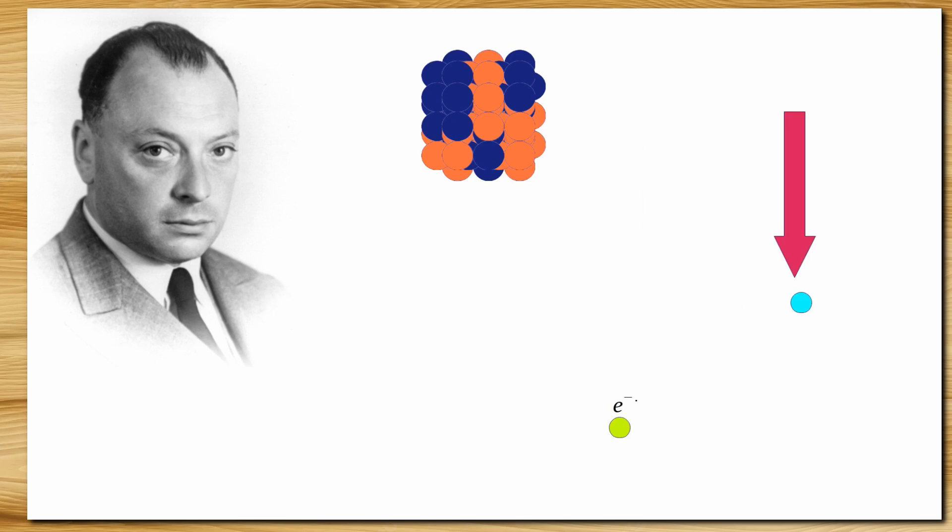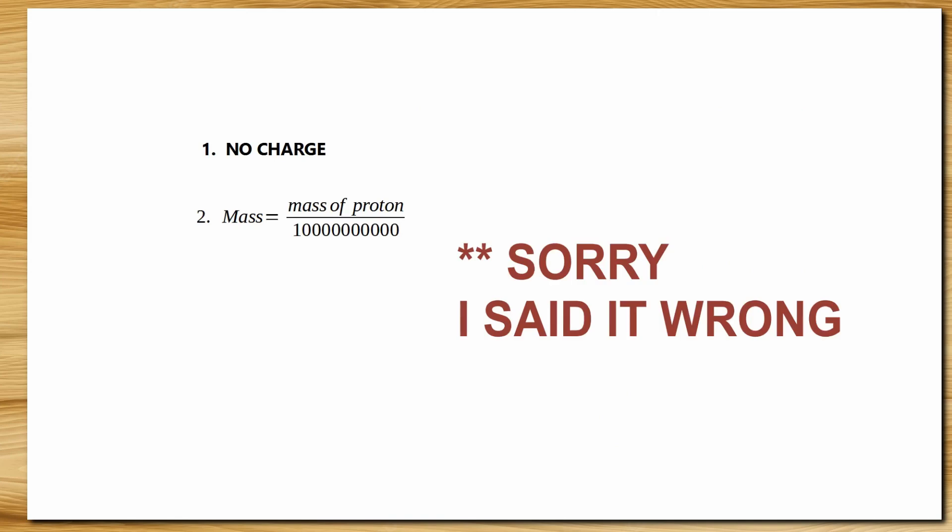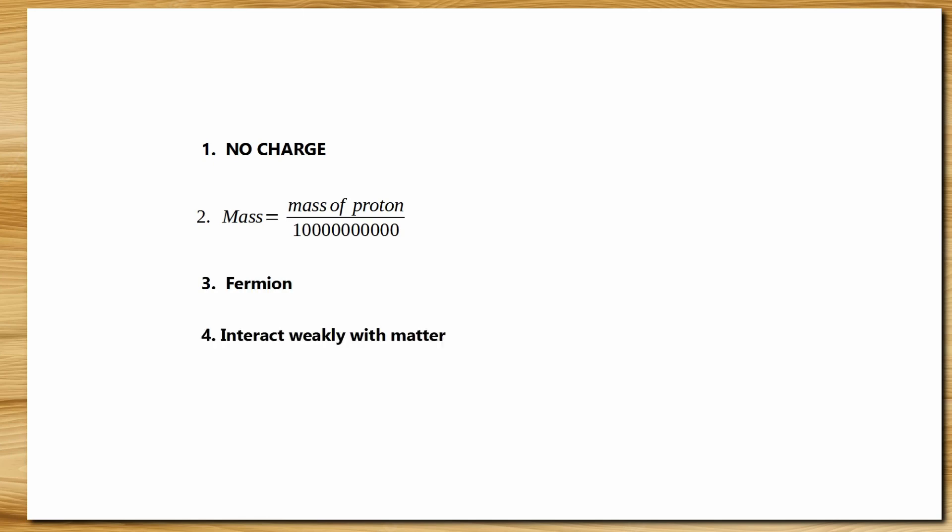Although he didn't have any evidence, he published his paper saying that during beta decay the energy is distributed almost evenly between beta particles and this unknown particle. To make beta decay possible, this unknown particle must be chargeless. It must be very, very tiny, about one hundredth of mass of a proton. It should be a fermion that is a spin-half particle and it should interact very weakly with matter, making it very hard to detect.